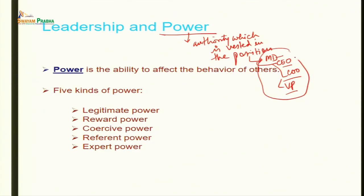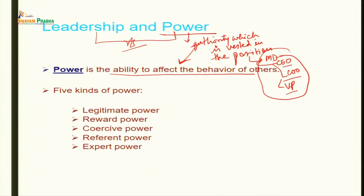Let us understand how we have different kinds of powers that leaders can exercise. Power is the ability to affect the behavior of others, but this ability also comes from being authorized to do so — like a teacher is authorized to modify your behavior. In general, if someone sets an example — whether a political leader, a movie actor, your parents, teachers, or siblings — they are exerting their power, the ability to influence behavior, meaning bringing a desired change in behavior.